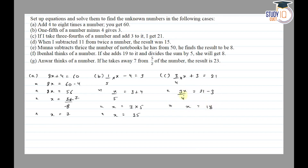So 3/4 x equals 18. We multiply both sides by the inverse, which is 4/3. The 3s cancel out, so x is equal to 18 into 4 by 3, which gives x is equal to 24.